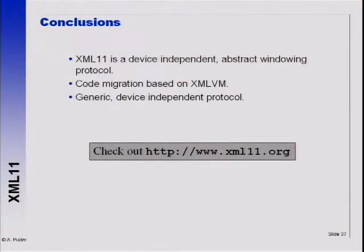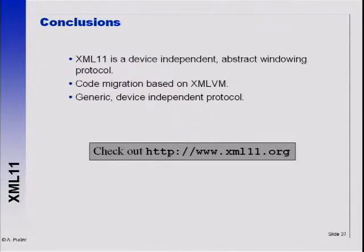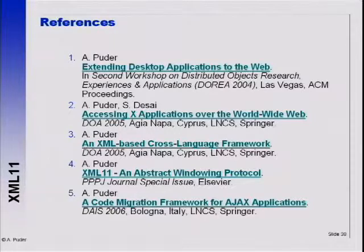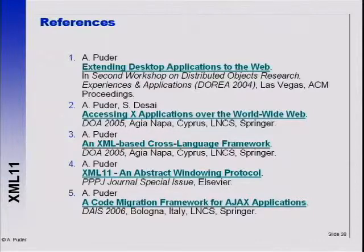So in summary: XML 11 on the outside is an abstract windowing protocol inspired by the X protocol. We have a code migration framework based on XML VM, which is an XML representation of Java class files. You can download documentation from the homepage. That's my main business — I just publish papers and try to inspire others. I'd like to thank you for your attention. If you have any questions, I'm happy to answer them.